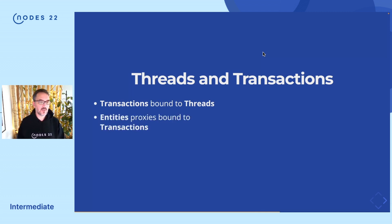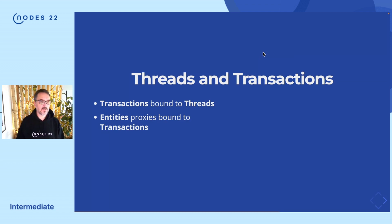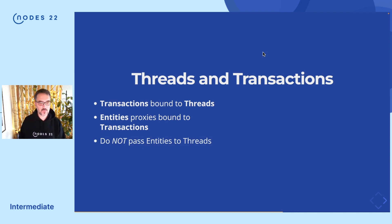The other thing is that entities are basically proxies that are scoped to a transaction. So in the example where we said tx.findNode and so on, we get back an entity which is actually a proxy. If you try to pass this node over to another thread with a new transaction and try to access it from there, you will get an exception. So you can't pass them over to new threads.